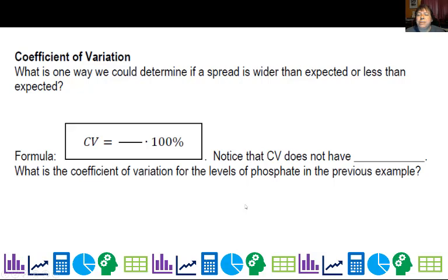Now another part of our lesson today is looking at how do we determine if data is spread wider than expected or not. And the way we do that is we compare our standard deviation to the average. So we're going to take that s that we've just been calculating and put it over the mean for the sample and then multiply by 100%. Notice that this is called the coefficient of variation, CV, and it does not have units.